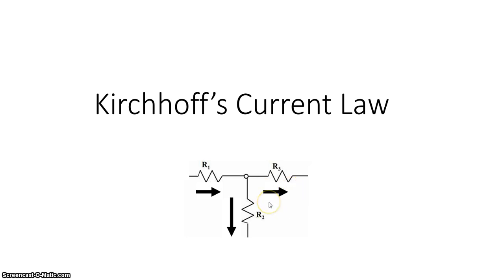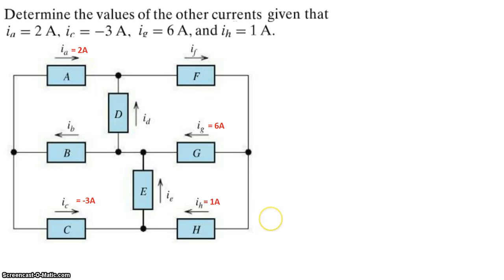Using this law, let's work on a simple example. Here's a circuit with a number of elements, A through H. Few of the currents are given: IA is 2 amps, IC is negative 3 amps, IG is 6 amps, and IH is 1 amp. There are four more currents that need to be found. So our goal is to use Kirchhoff's Current Law to find the values for those currents.